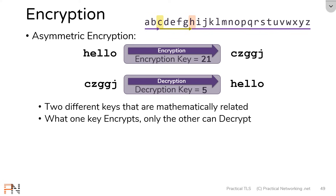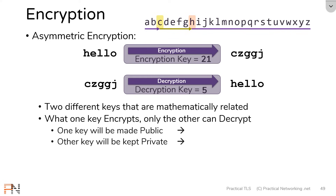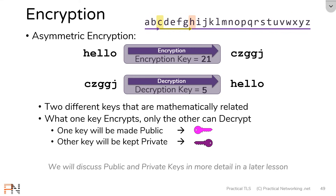What the industry does is take one key and label it the public key, making it available to anybody that asks for it. The other key is called the private key, and it's kept to themselves — never shared with anybody else. This way, anybody can use your public key to encrypt something, but only you possess the private key that allows you to decrypt it. We'll be talking about public and private keys in more detail in the next lesson, but for now let's continue comparing and contrasting symmetric and asymmetric encryption.